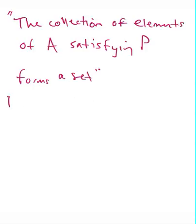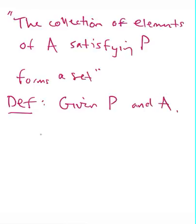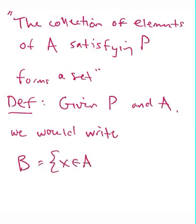And a notational definition, given a property P and a set A, we would write, for the B that was granted to us by axiom 6, we would write B is the set of all X in A such that P of X holds. Okay, so that's enough about this. In the next video, we'll talk about the axiom of infinity, and perhaps the replacement schema, but I think we're only going to have time to talk about infinity.